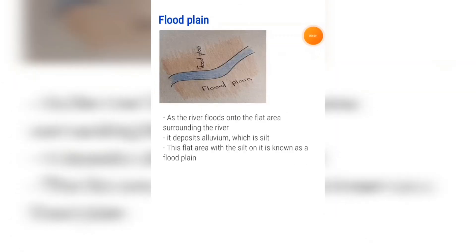Floodplain: as the river floods onto the flat area surrounding it, it deposits alluvium, which is silt. This flat area with the silt on it is known as a floodplain. A floodplain is nutrient rich, which is where a lot of farming takes place. However, this can cause problems because when the river floods, the farmlands also get flooded.